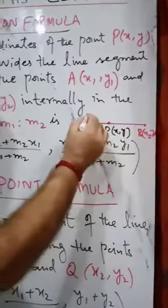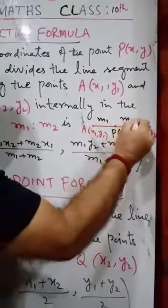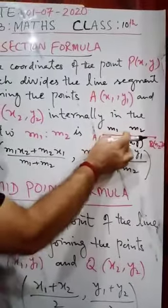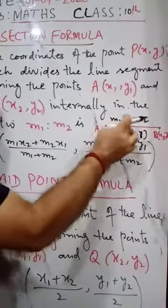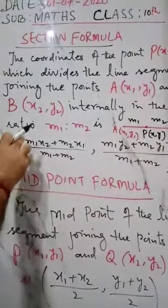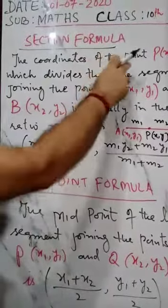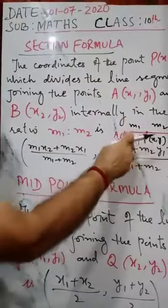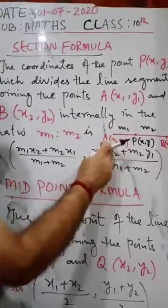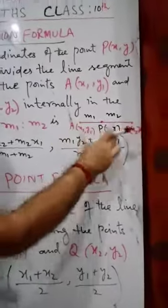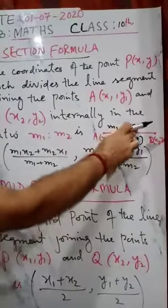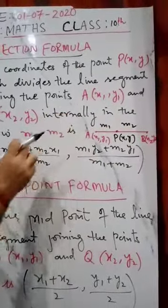...which divides the line segment in the ratio m1 to m2. So PA is m1 and PB is m2. The section formula gives the coordinates of point P(x,y) which divides the line segment joining points A and B in the ratio m1 to m2 internally.